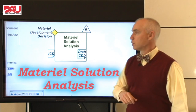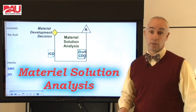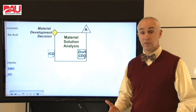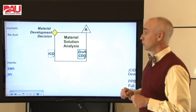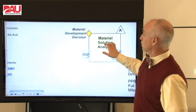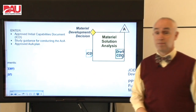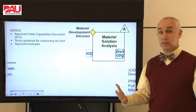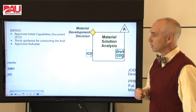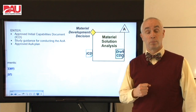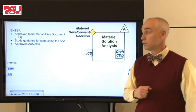Our first phase is Material Solution Analysis. We're kicking that off with an initial capabilities document — what the user provides — which says we have a warfighting capability that's missing in order to defend the nation. In addition to the initial capabilities document, in order to enter this phase we've got to have a plan and guidance for how we're going to do our analysis to pick the best technology — that Analysis of Alternatives. We also have to have an approved plan for how that AOA is going to be done and who's actually going to do it.